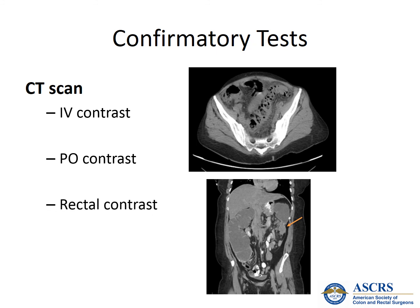Rectal contrast can be helpful in assessing the mid to distal colon and rectum for an anastomotic leak, stricture, fistula, or mass. In many institutions, a member of the operating team should be available to administer the rectal contrast, especially in a patient with a distal recent rectal anastomosis. Please note that this route of contrast may not be the best for evaluation of the distal rectum and anus, as the catheter tip used to administer the contrast could bypass these areas.